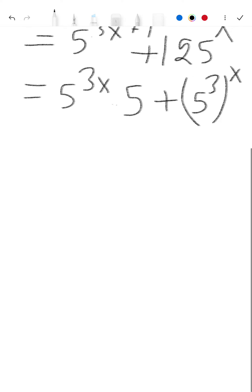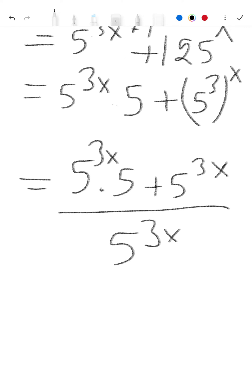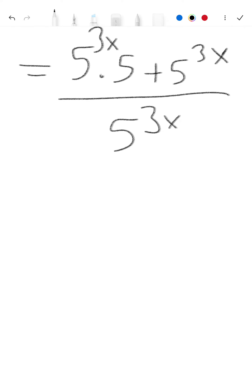So here we write 5 to the power 3x multiply 5, plus 5 to the power 3x, upon 5 to the power 3x. Now in this equation, 5 to the power 3x is common, so we write here 5 to the power 3x. When we divide by 5 to the power 3x, here is 5 left, and here is 1, and below is 5 to the power 3x.